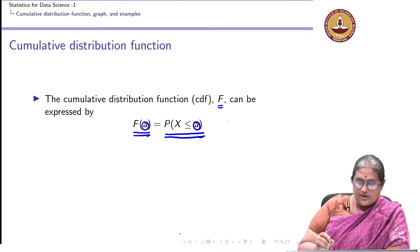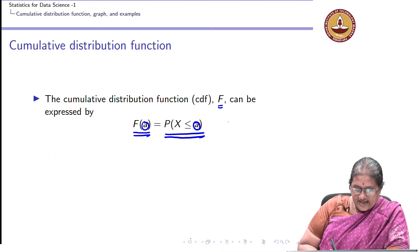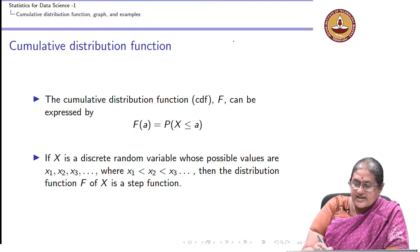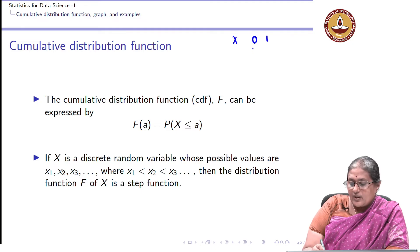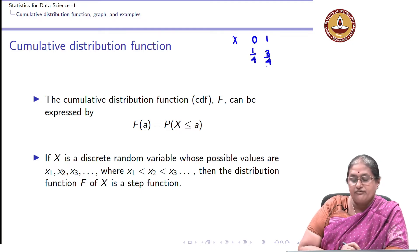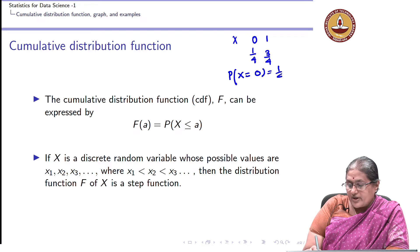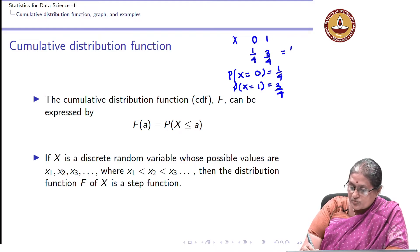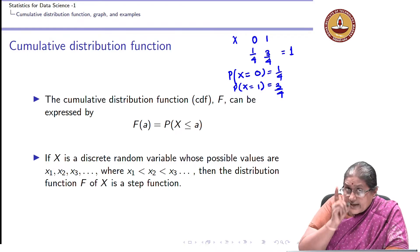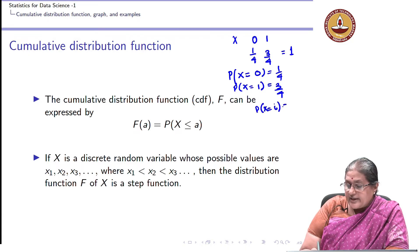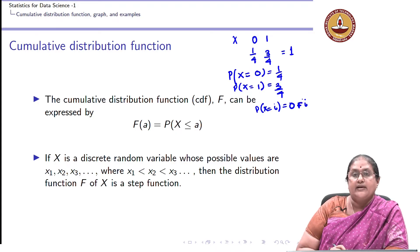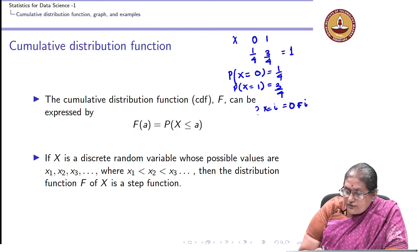Let us look at a simple example. Suppose X takes only the values 0 and 1 with probabilities 1/4 and 3/4 respectively. The PMF is: P(X = 0) = 1/4, P(X = 1) = 3/4. It is a valid probability mass function because both probabilities add up to 1. Additionally, P(X = i) = 0 for all other values of i.